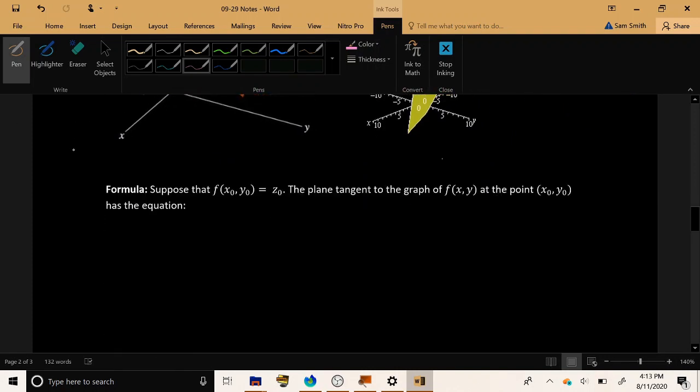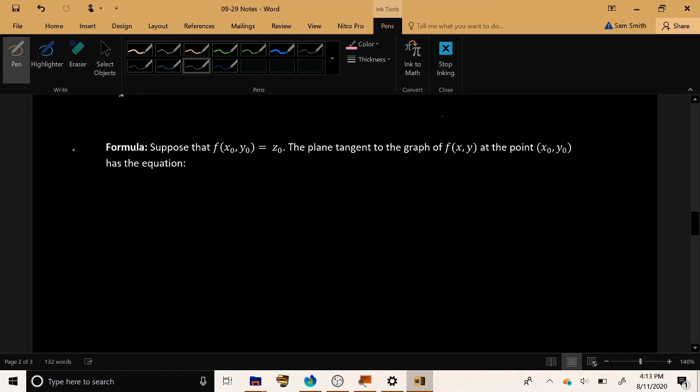Now let's establish the formula for the tangent plane. The plane tangent to the graph of f of x, y, at some specified point, let's call it x naught, y naught,